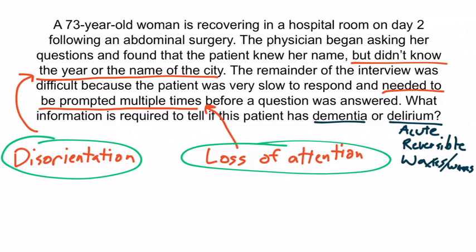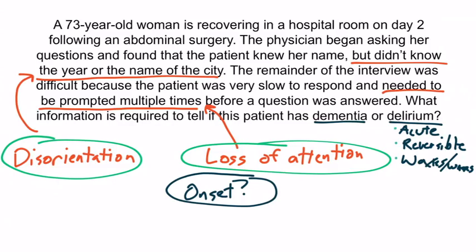Has she been acting this way for years? If so, that indicates dementia. But if these symptoms appeared only after her abdominal surgery, then we're thinking delirium. The biggest thing you need to determine is the onset. If it came on suddenly and acutely, you can anticipate it being reversible with a waxing and waning pattern. So the key information needed is the onset of symptoms. That concludes this section.